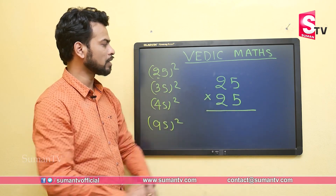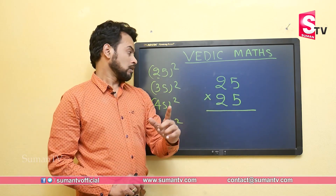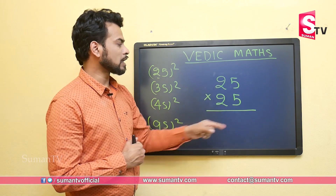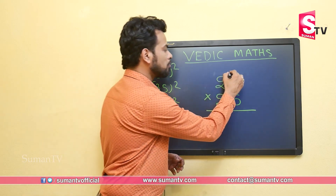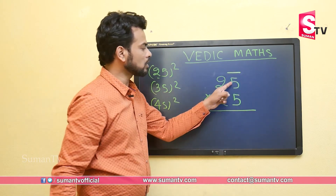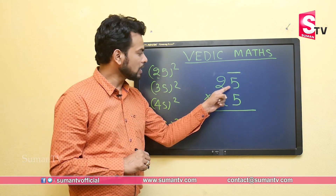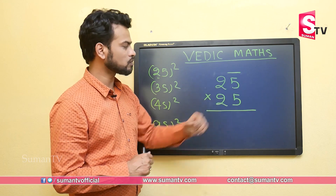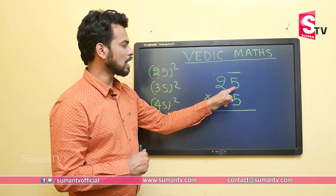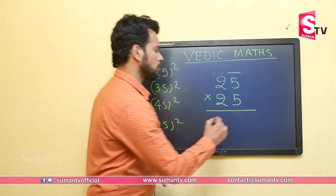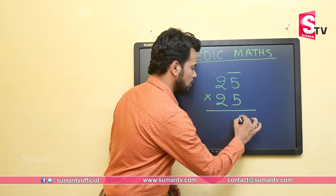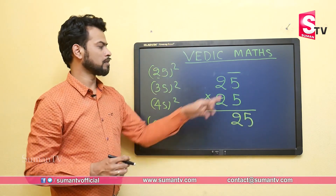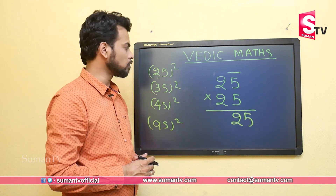Here, 25 multiplied by 25. Listen carefully — very important trick. In the first step, we will multiply the unit digit with the unit digit. The unit digit is 5, so we multiply 5 with 5, and the answer we get is 25. That 25 we will write here fully.